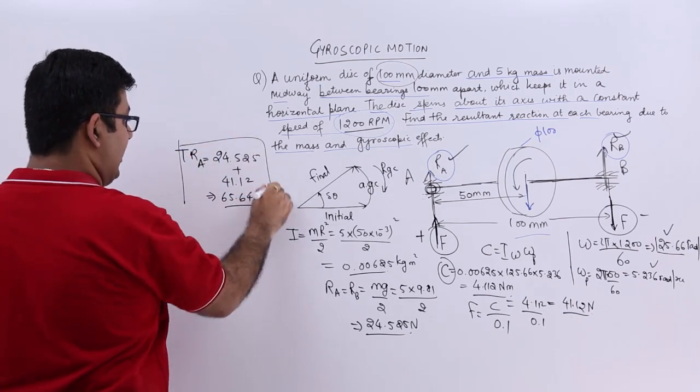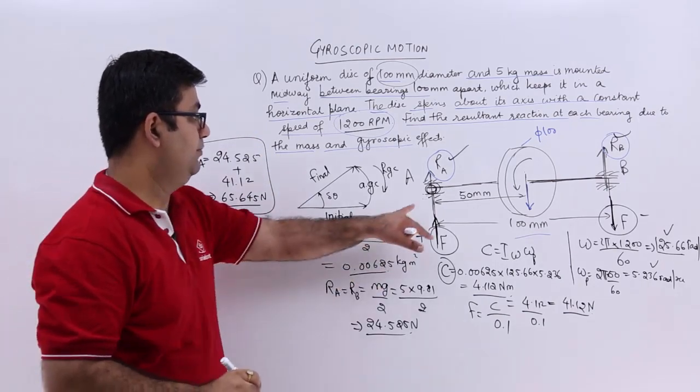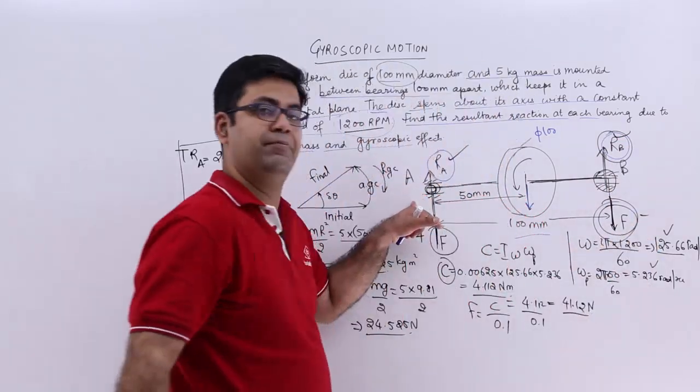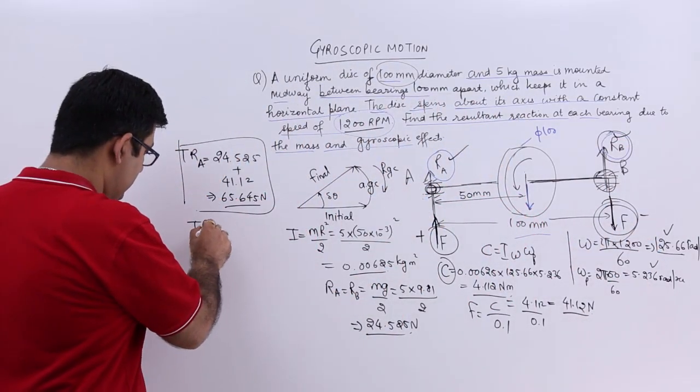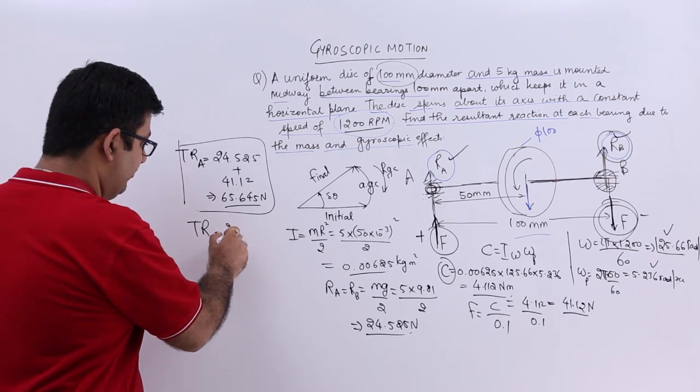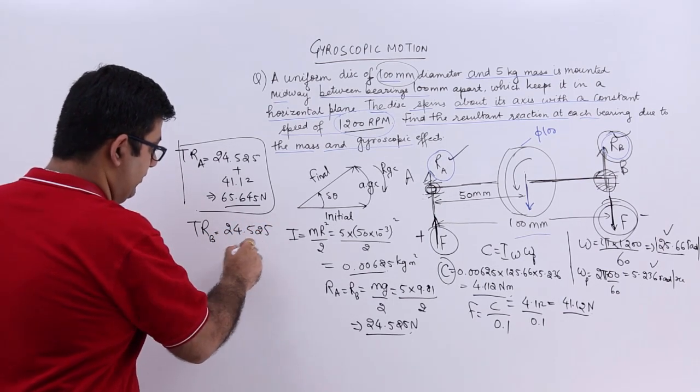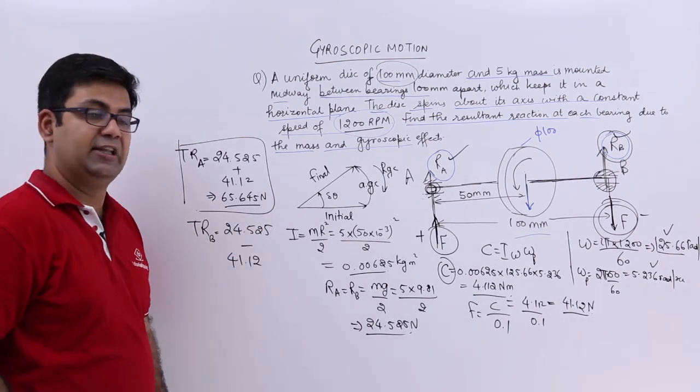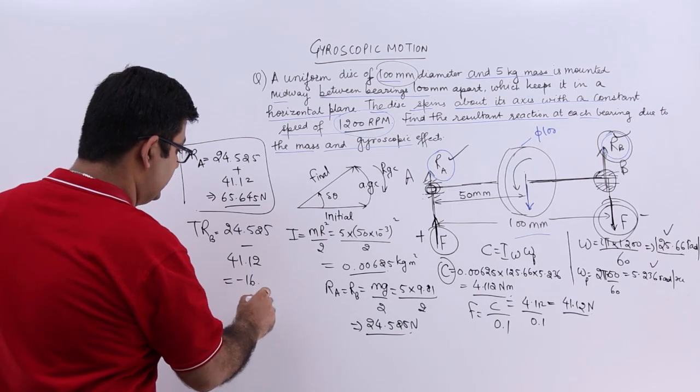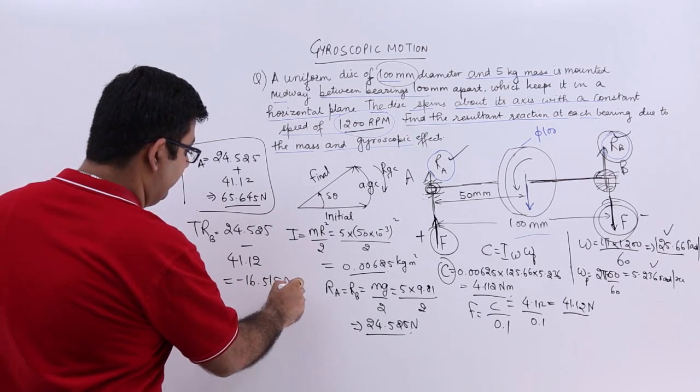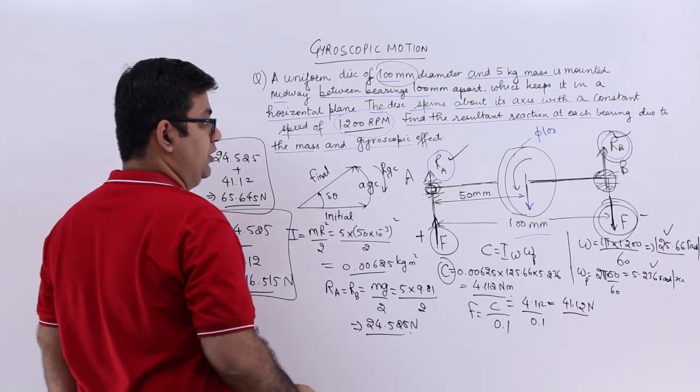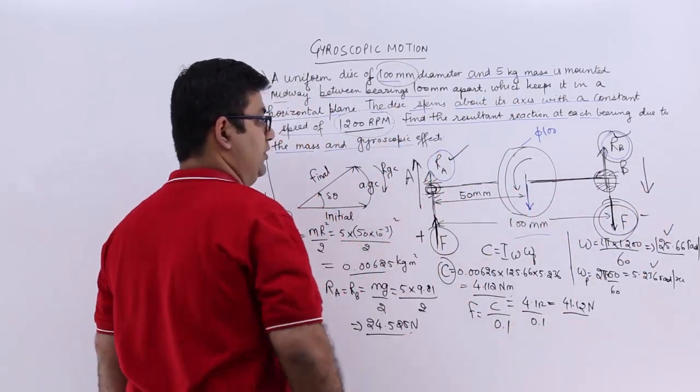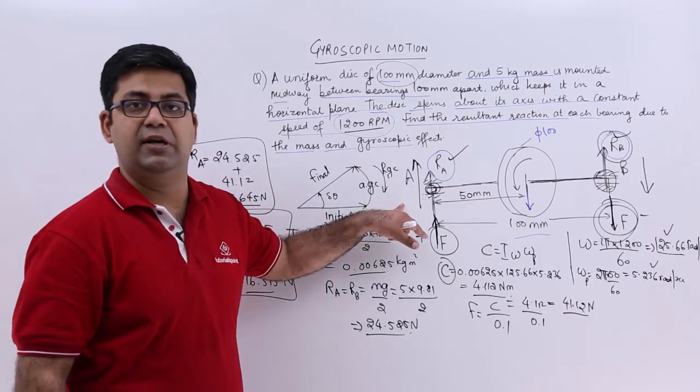At bearing B you will have R_b - F. So R_b is 24.525 - 41.12, that would leave us with a negative value of -16.595 newtons. This is a total negative reaction in the downwards direction. This is a total positive reaction in the upwards direction.